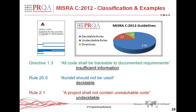We start with MISRA C 2012. It's a coding standard which aims at subsetting the C language to reduce the possibility of errors and focuses on safety. It contains 159 guidelines, of which 16 are directives, 116 are decidable rules, and 27 are undecidable rules.